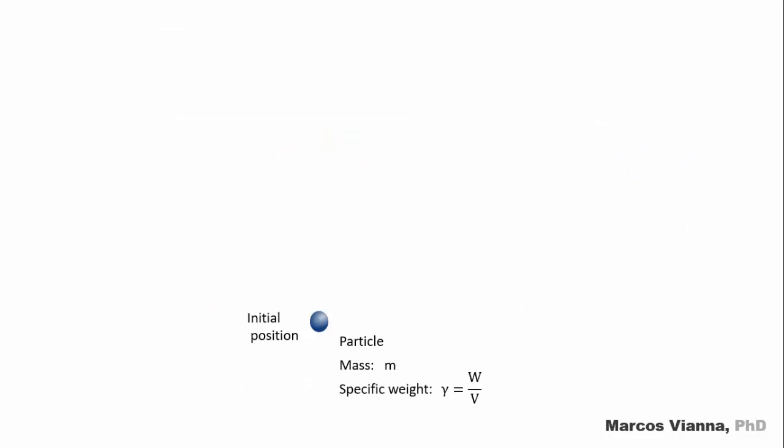Let's consider this particle. Its mass is m and its specific weight is gamma. We'll move it to another position, higher than it was before. The vertical distance between its final and initial position is h. If you want to do it in a place where g is the gravitational acceleration, we must perform a work equal to mgh.